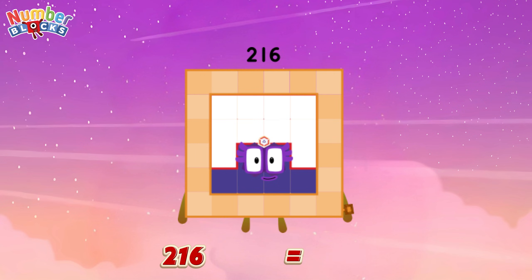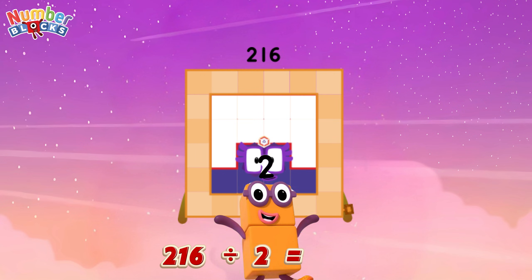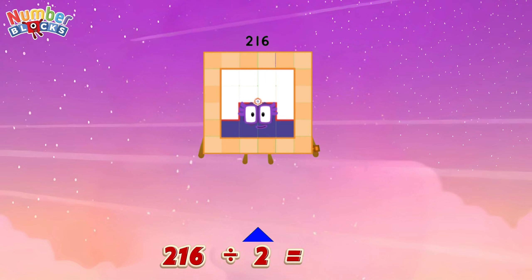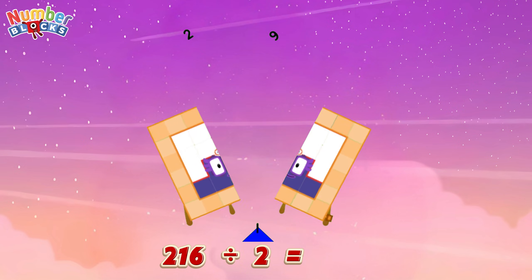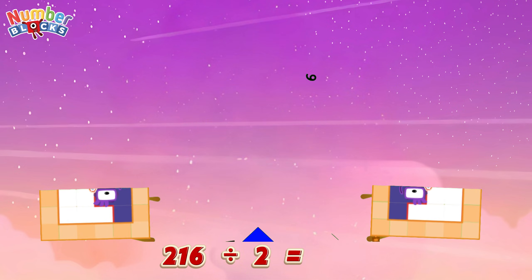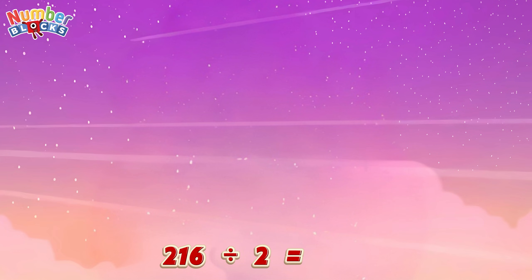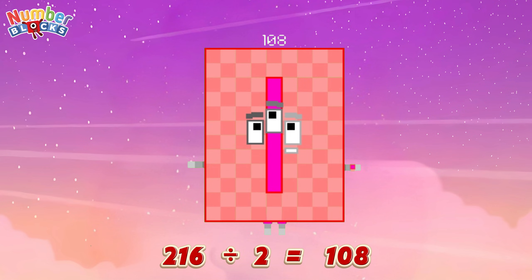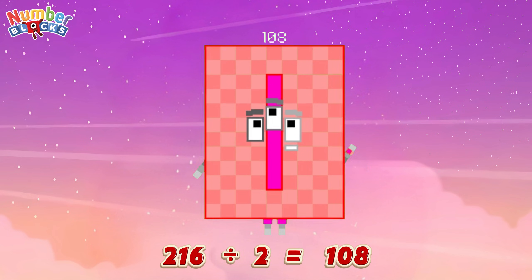Two hundred and sixteen divided by two is equals one hundred and eight!